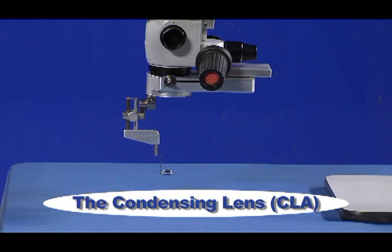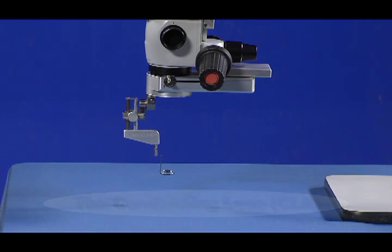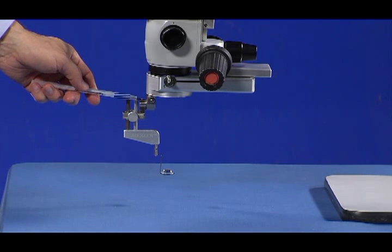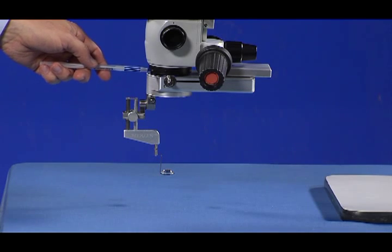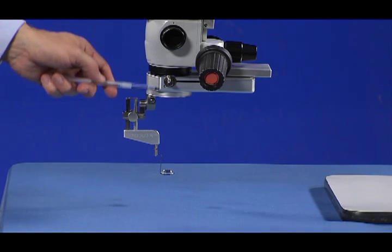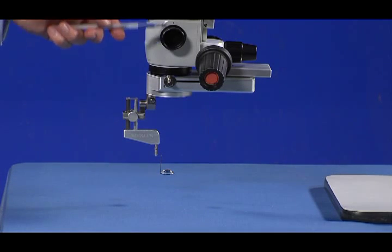Now let's look at each of these components in more detail. The CLA has two main functions. First, to provide the anchor point for suspending the LPU and surgical lens below the objective lens. And second, to properly align the system to the microscope's optical path.